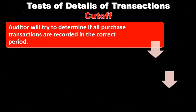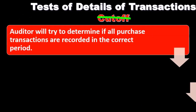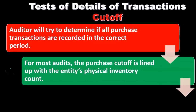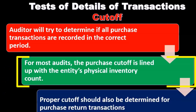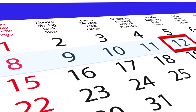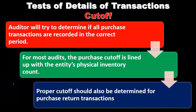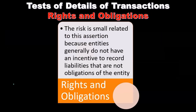The next assertion is cutoff — whether all purchase transactions are recorded in the correct period. For most audits, the purchase cutoff lines up with the entity's physical inventory count, which typically occurs near year end. Proper cutoff should also be determined for purchase return transactions.